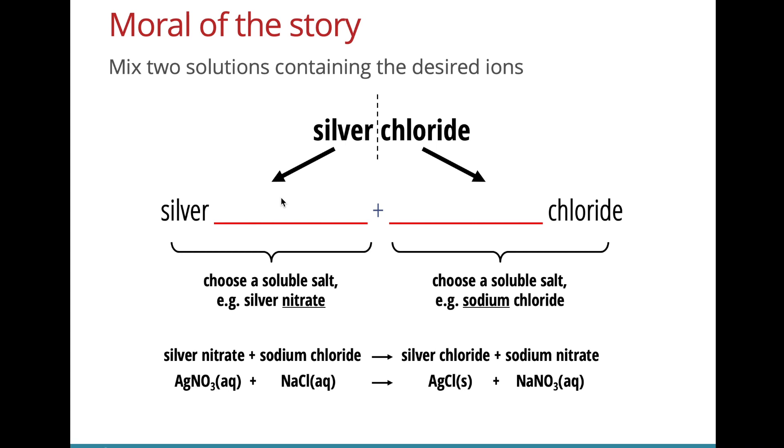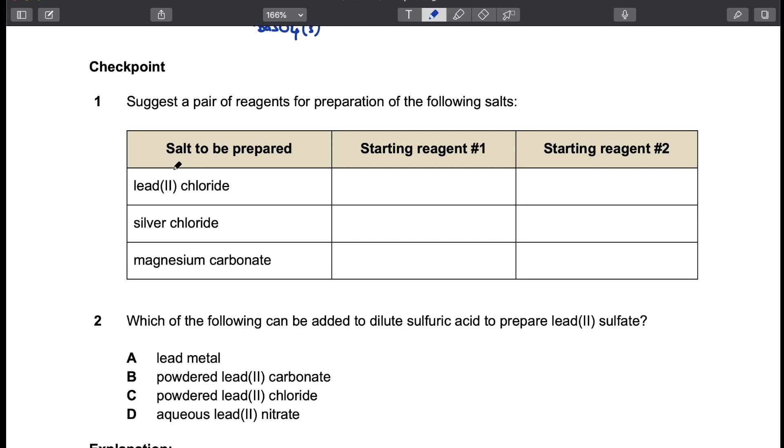So because all nitrates are soluble, I love to use nitrates here. And sodium chloride could be an easy choice because all sodium salts are also soluble. So back to here, if we want to prepare lead(II) chloride, we can use lead(II) nitrate and sodium chloride.